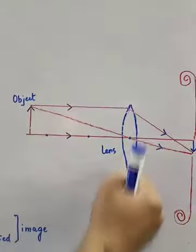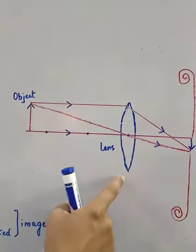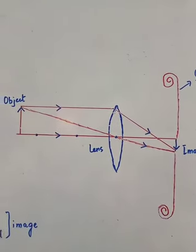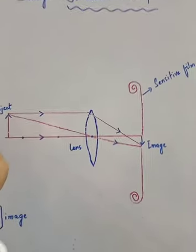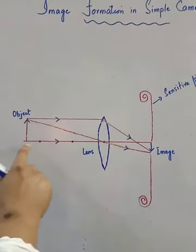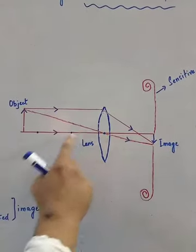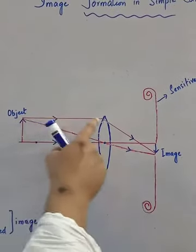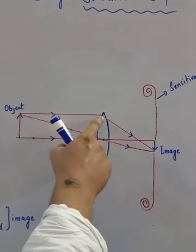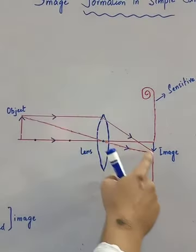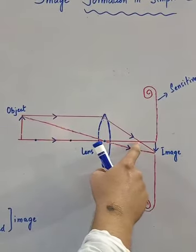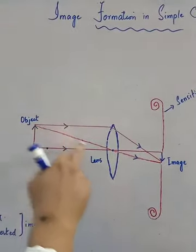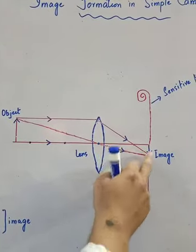This is the object, this is a simple lens. Which lens is this? This is a convex lens. It is very clear that a convex lens will be used in the simple camera. This is the principal axis, this is optical center, this is focal length, this is 2f. A ray emitted from the object after striking reflects and passes through the focal length on the opposite side of the lens. The second ray passes through the optical center. It meets there and the image is created.